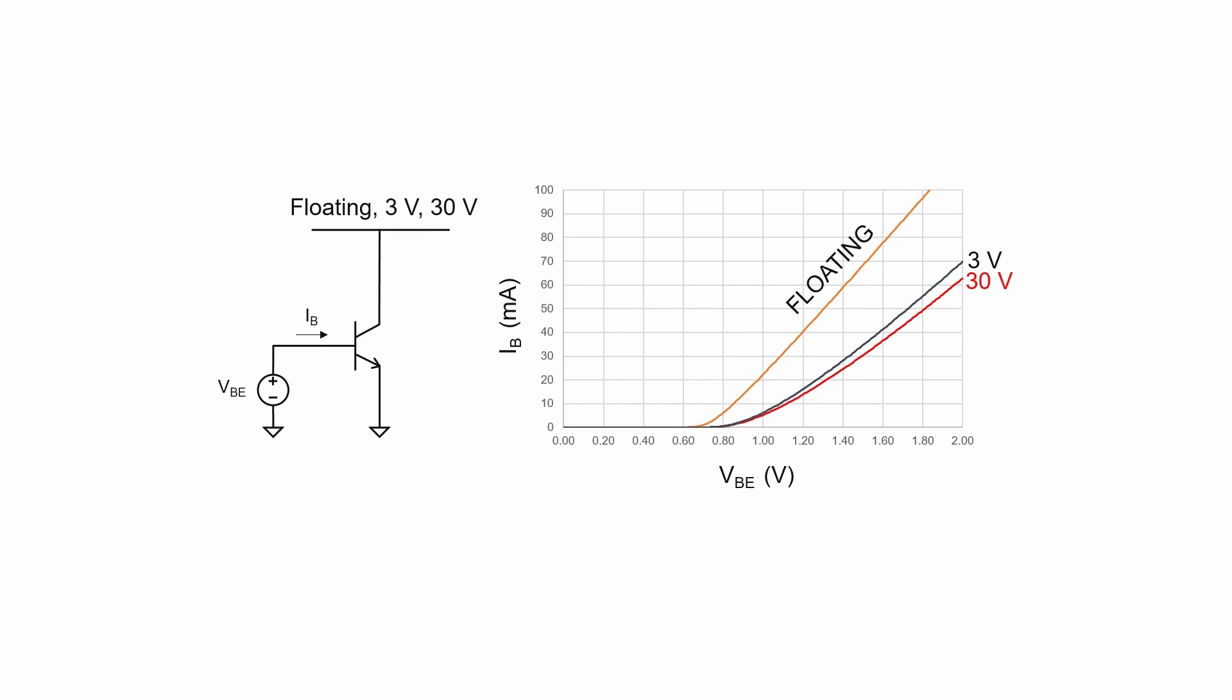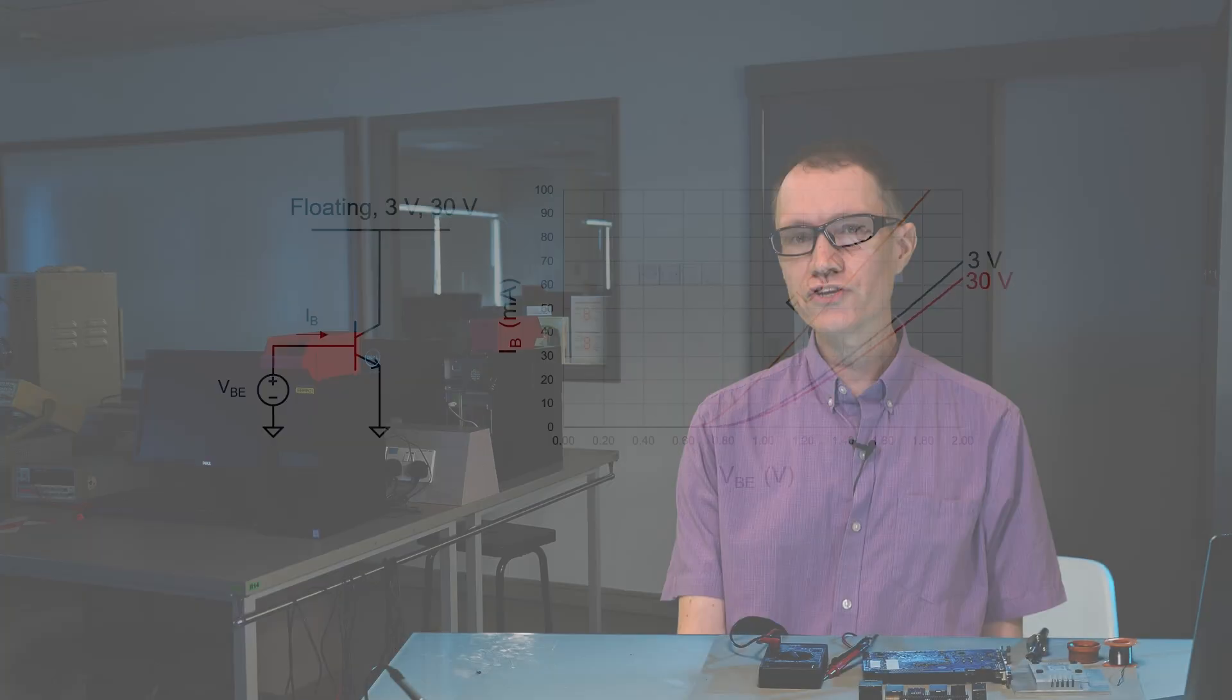And it turns out that for a given VBE, we're going to have less base current flowing. What I'd like you to notice from this graph, though, is that the curves for 3 volts and 30 volts are very similar to one another. In other words, if we put a voltage up at the collector, it doesn't have a huge influence on the amount of current that's flowing through the base. That's one of the reasons why we can use a transistor as an amplifier. It kind of behaves like a current source that's a little bit immune to voltages at the collector's side.